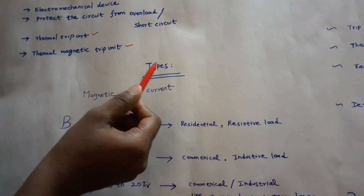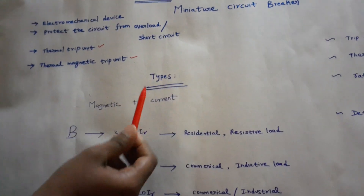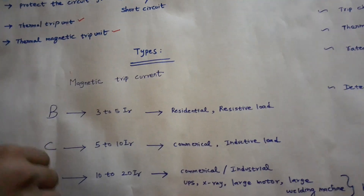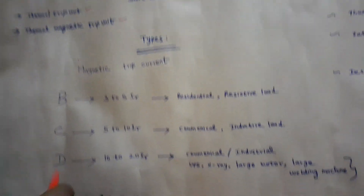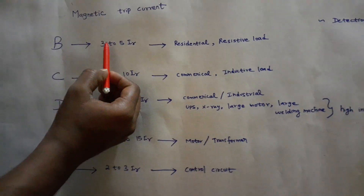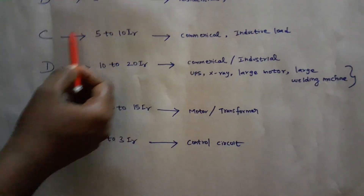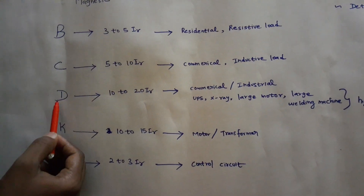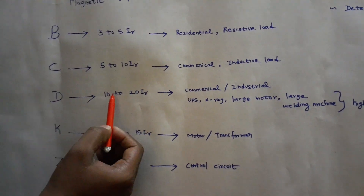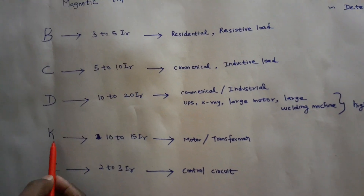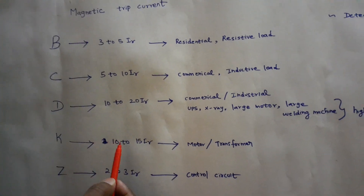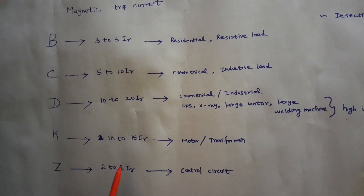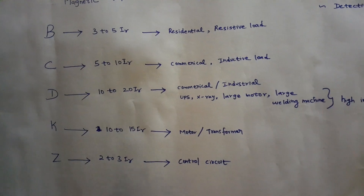The types of MCB are B, C, D, K, and Z. B type trips at 3 to 5 times the rated current. C type trips at 5 to 10 times. D type trips at 10 to 20 times. K type trips at 10 to 15 times. Z type trips at 2 to 3 times the rated current.